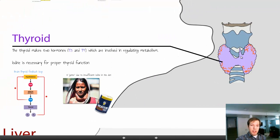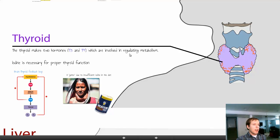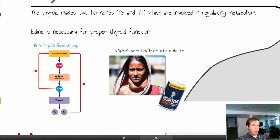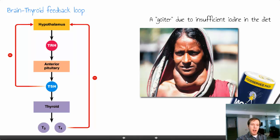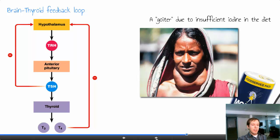The thyroid covers the trachea, located towards the base of the neck. It is involved in making hormones named T3 and T4, which help regulate metabolism, and we need iodine for the thyroid to work properly. Without iodine, the thyroid will swell up — triple, quadruple, ten times bigger in size — creating a non-cancerous growth called a goiter. Salt is now iodized and distributed throughout the world to lower the number of people with this iodine deficiency.